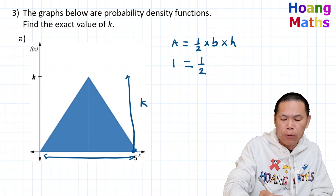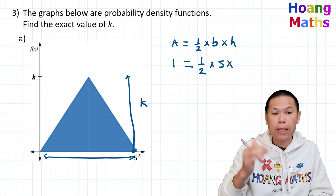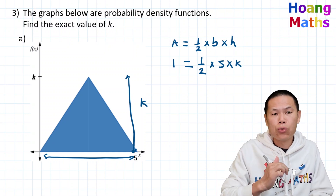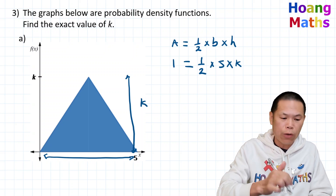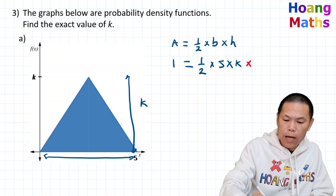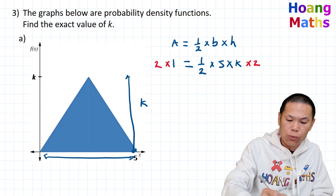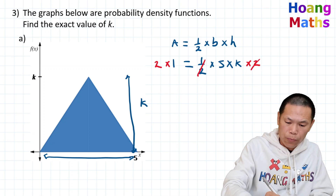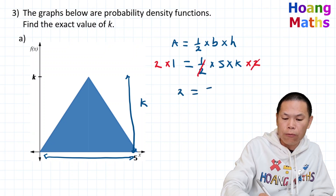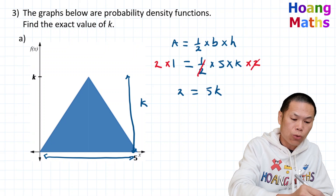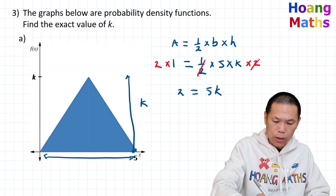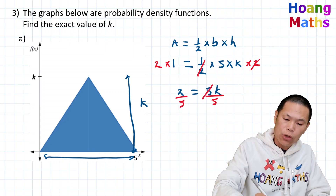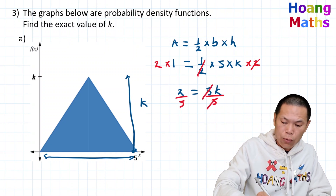So: one equals a half times five times k. I multiply both sides by two to get rid of the fraction — that gives two equals five k. Then I divide both sides by five, so k equals two over five.